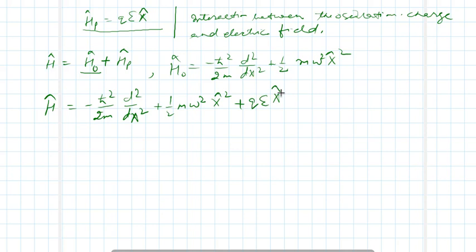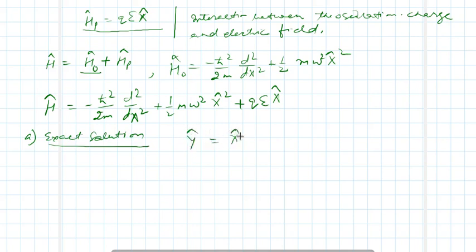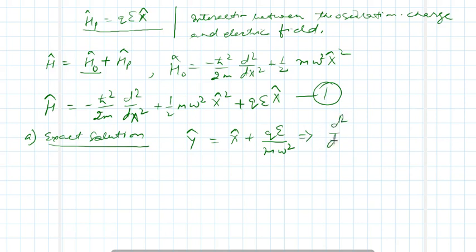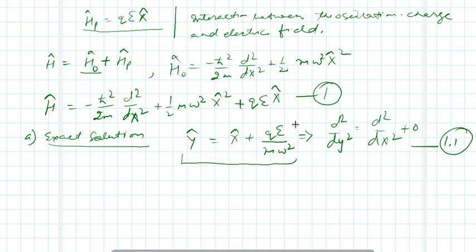So let us try to find out the exact solution. Let us assume that y is equal to x plus qε/mω², call this equation 1. This leads to the equation d²/dy² = d²/dx², call this equation 1.1. This follows because the added term is a constant, independent of both x and y.